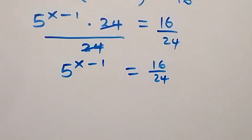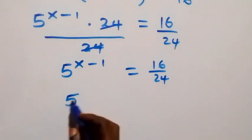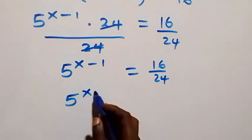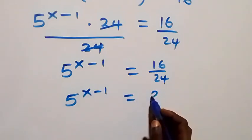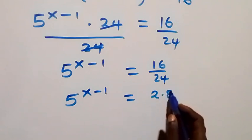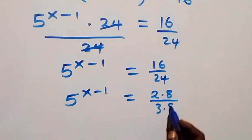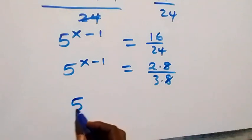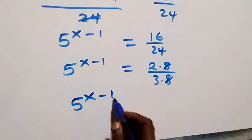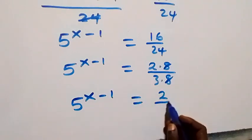16 over 24 can also be written as 2 times 8 over 3 times 8. The 8s cancel each other, so we have 5 raised to power x minus 1 equals 2 over 3.